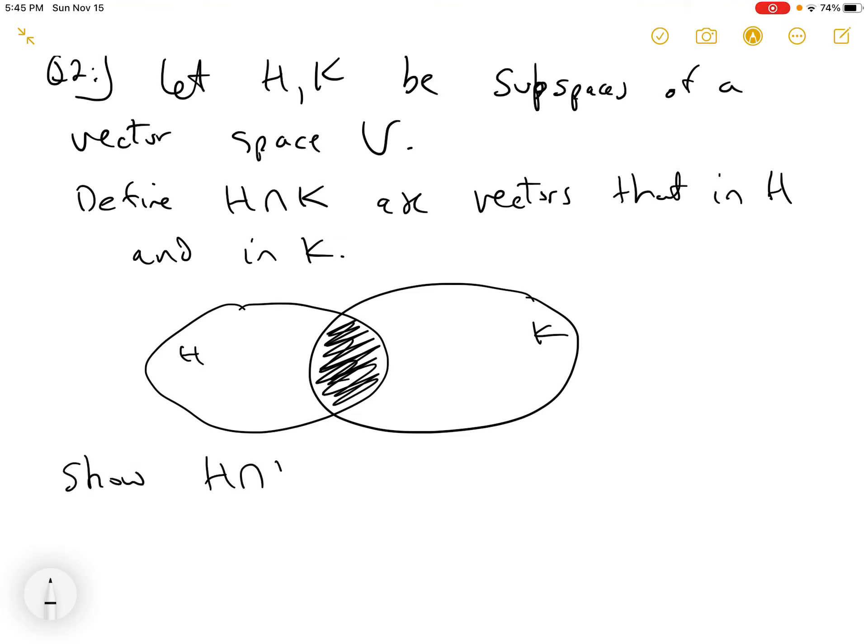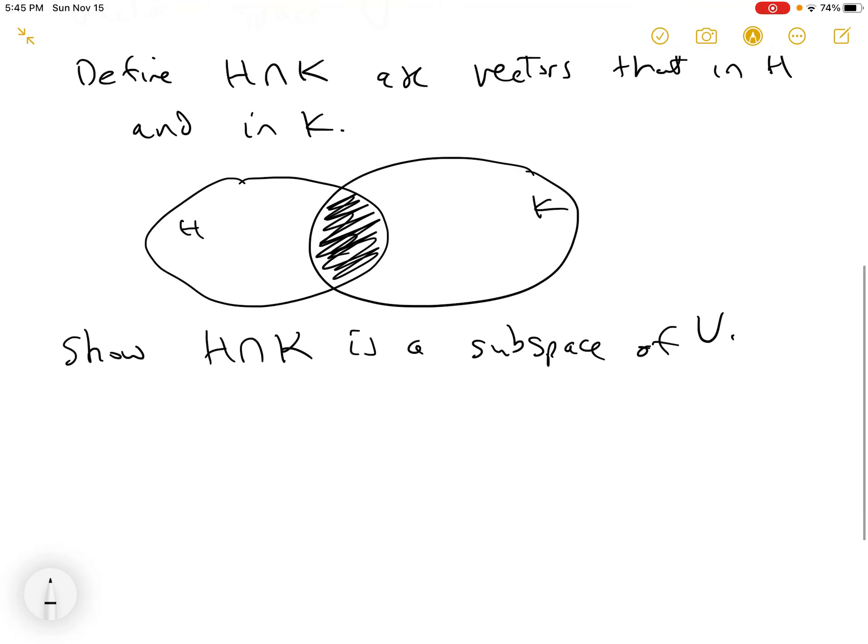This is a classic problem in mathematics. You want to show that H intersect K is a subspace of V. All right, and I'll do part of this. I'm going to do less and less as this goes on because I want to see what you guys produce when we chat. So part one of showing that something is a subspace is to show the zero vector is in H intersect K.